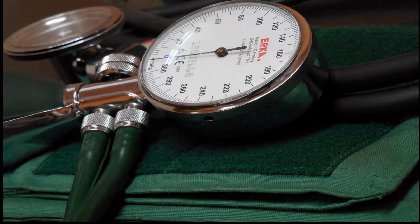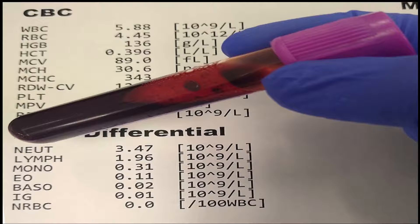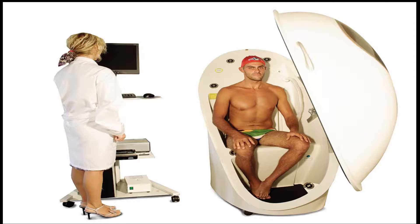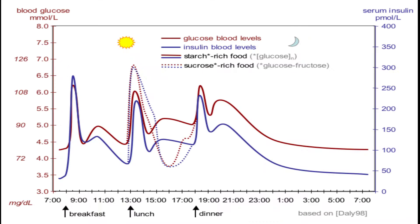There are a variety of biomarkers. For example, body temperature is a biomarker for fever. Blood pressure is a biomarker for the risk of stroke. Cholesterol is a biomarker for coronary and vascular disease. Auto antibodies are biomarkers for autoimmune disease. Body fat percentage is a biomarker for obesity. And blood sugar is a biomarker for diabetes.